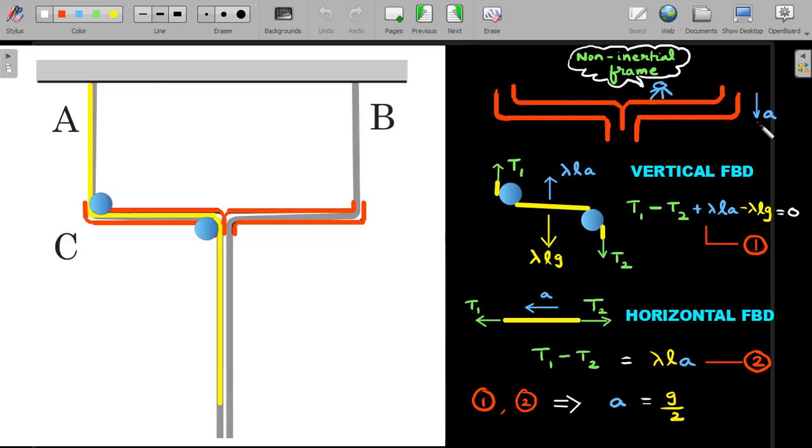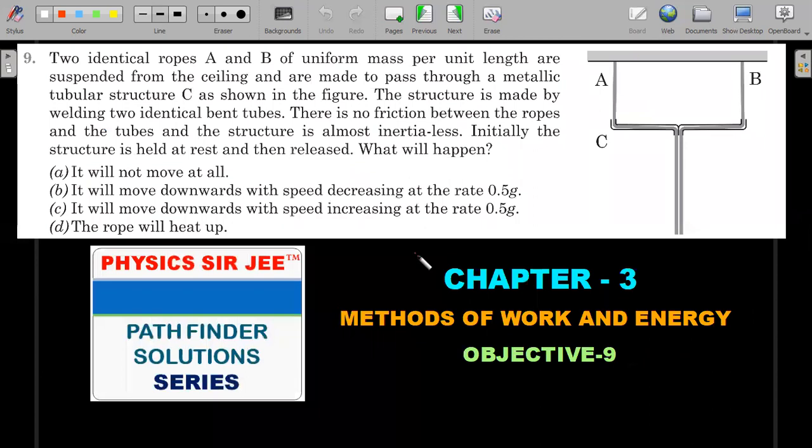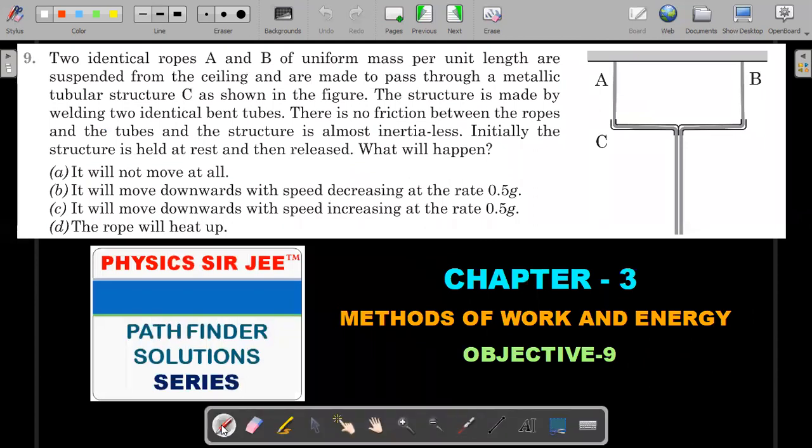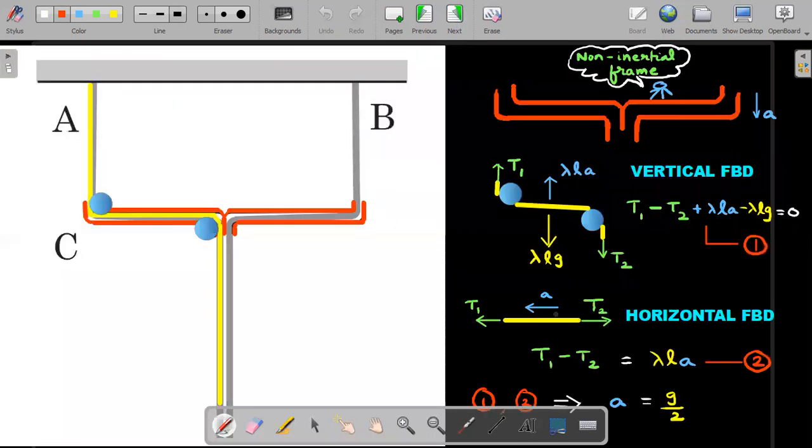So the required option is option C, which is acceleration with respect to ground, obviously of the tube, is g/2 as a positive value. Now coming to the option D: 'rope will heat up' is, I would say, a wrong answer. Reason being, the rope that is given actually is a nice little smooth bend structure, so there is no jerk in the way the rope and the tube are going to move. There is no abrupt transitions of velocity.